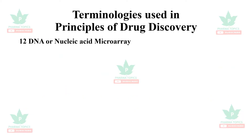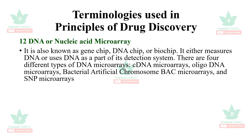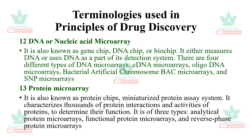Next is DNA or nucleic acid microarray, also known as gene chip, DNA chip, or biochip. It either measures the DNA or uses the DNA as part of a detection system. There are four different types: complementary DNA microarrays, oligo DNA microarrays, bacterial artificial chromosome (BAC) microarrays, and SNP (single nucleotide polymorphism) microarrays.